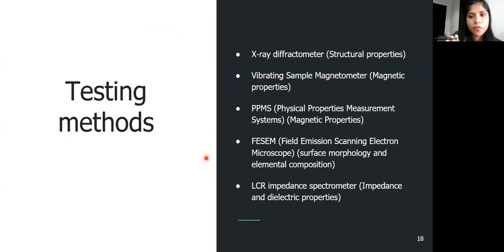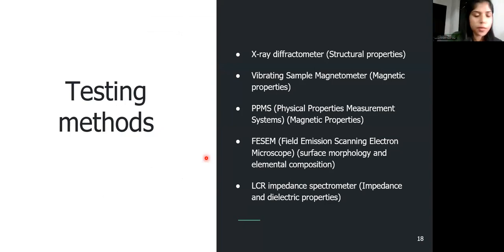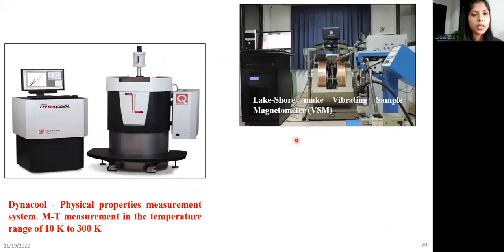The sample was characterized using X-ray diffractometry for structural properties, vibrating sample magnetometer (VSM) and PPMS for magnetic properties, FESEM for surface morphology and elemental composition to confirm the stoichiometric ratio, and an LCR impedance spectrometer to study dielectric properties.